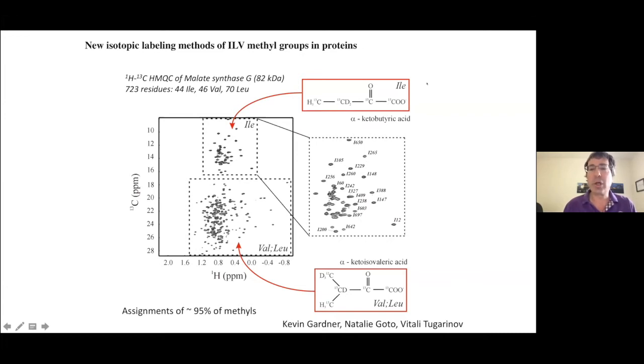And I illustrate just a couple of these precursors, butyric acid, shown here, which is a precursor for isoleucine, where the methyl of interest is going to be C13H3, and then the other positions in the protein are going to be deuterated, and either C12 or C13, depending on the application.